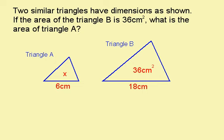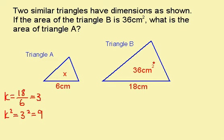Here's a question for you to try. Press pause and have a go at it. When you're ready for the answer, press play. This time, the scale factor is 18 divided by 6, which is 3. So k² is 3 squared, which is 9. This area here is this area divided by 9. So x is 36 divided by 9, which gives me 4 cm².